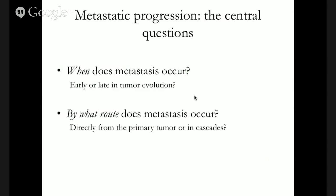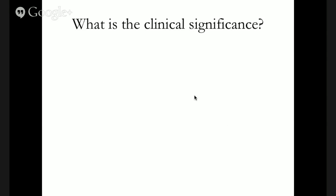The central questions still open with respect to metastatic progression are: when exactly does metastasis occur — is it early or late in tumor evolution? And by what route does it occur — do all metastases come directly from the primary tumor, or do they give rise to each other in a cascade?